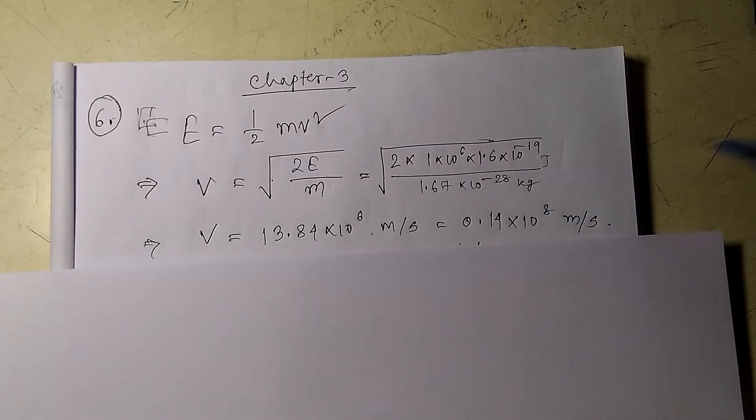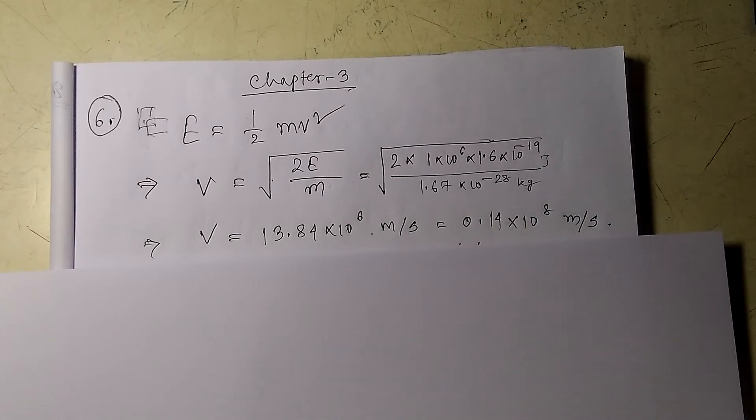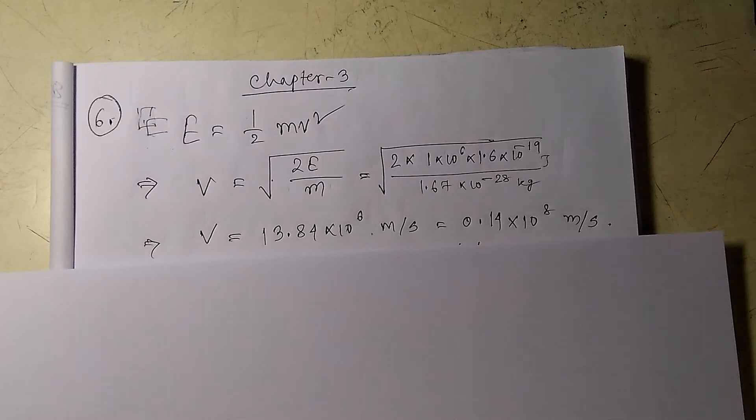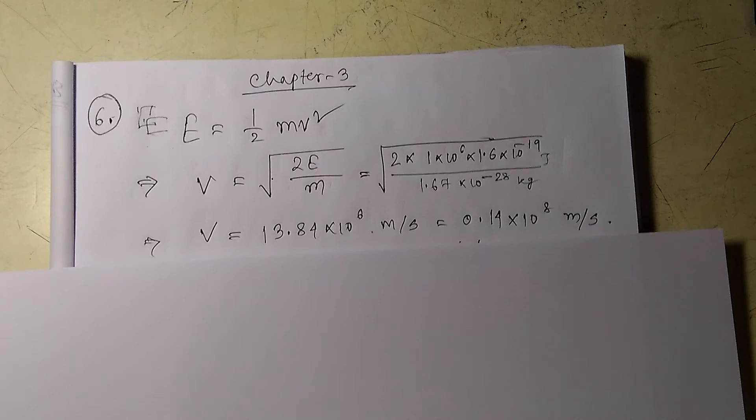0.14 times 10 to the power 8 meters per second. As you can see, it is less than the speed of light, because the value of speed of light C is 3 times 10 to the power 8 meters per second. It is very much less than that.